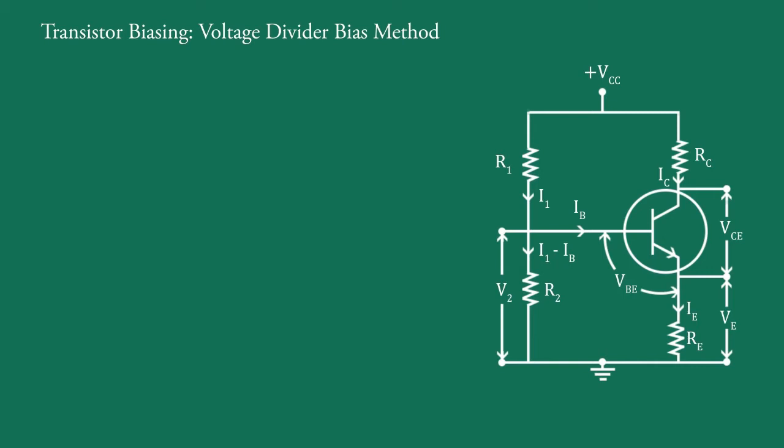This is the most widely used method as it has a very high degree of bias stability even when beta and leakage currents are high. Let's analyze the circuit.